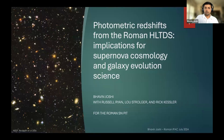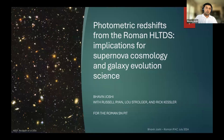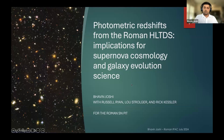I'm Bhavan Joshi. I'm a postdoc at Johns Hopkins, and I work with the Roman Supernova PIT. I wanted to talk today about some preliminary results from an ongoing study we're conducting on the quality of photometric redshifts that we can expect for the Roman High Latitude Time Domain Survey, and what that means specifically for HLTDS design considerations like depth, the number of filters, and where to point Roman. This is work I've been doing with Russell Ryan, Louis Stralger, and Rick Kessler, and several others in the Supernova PIT team.